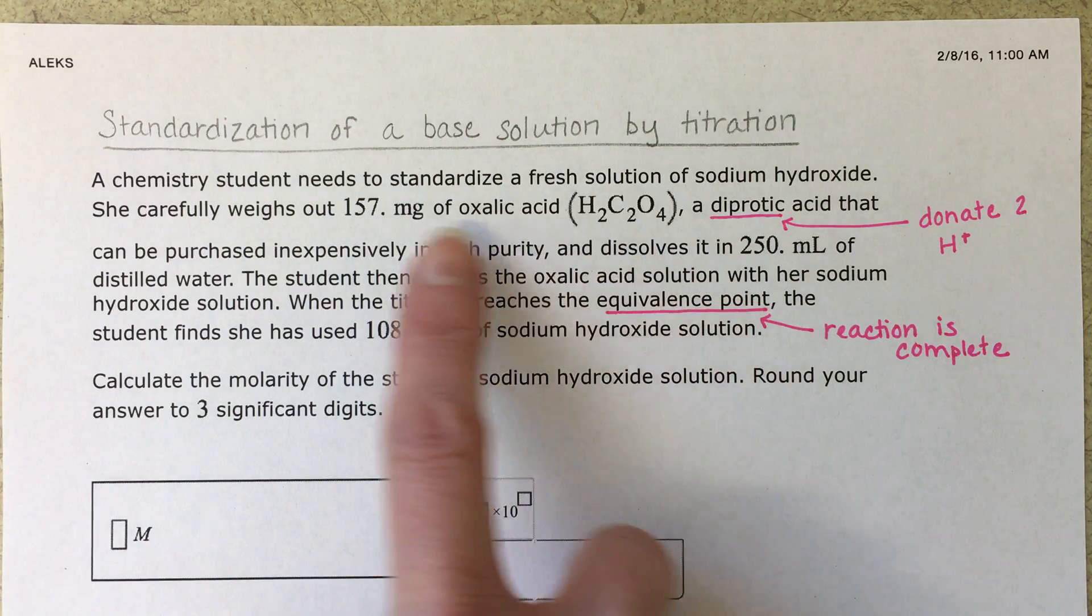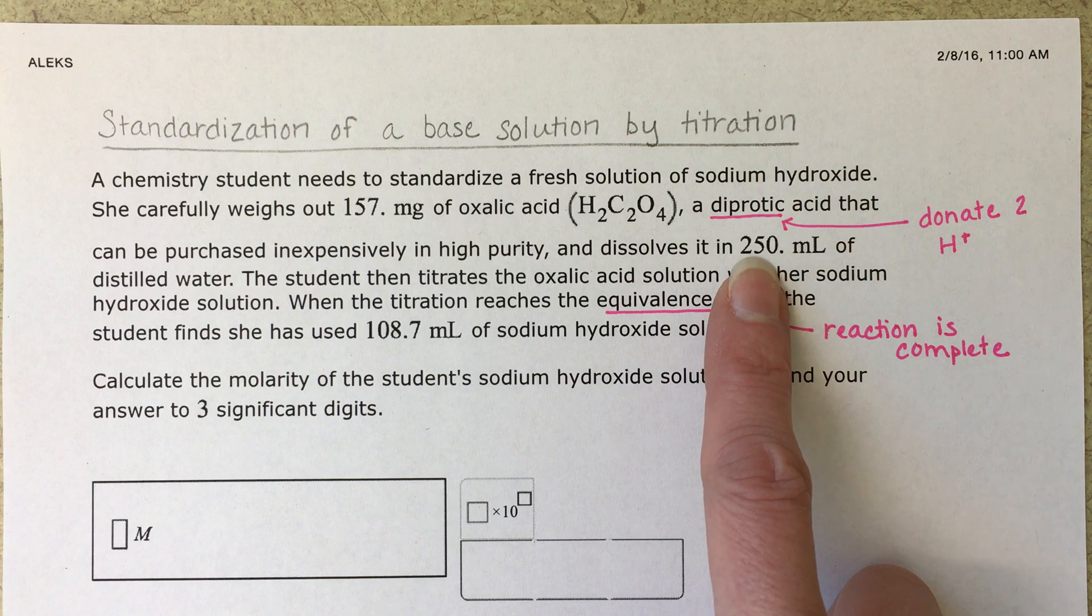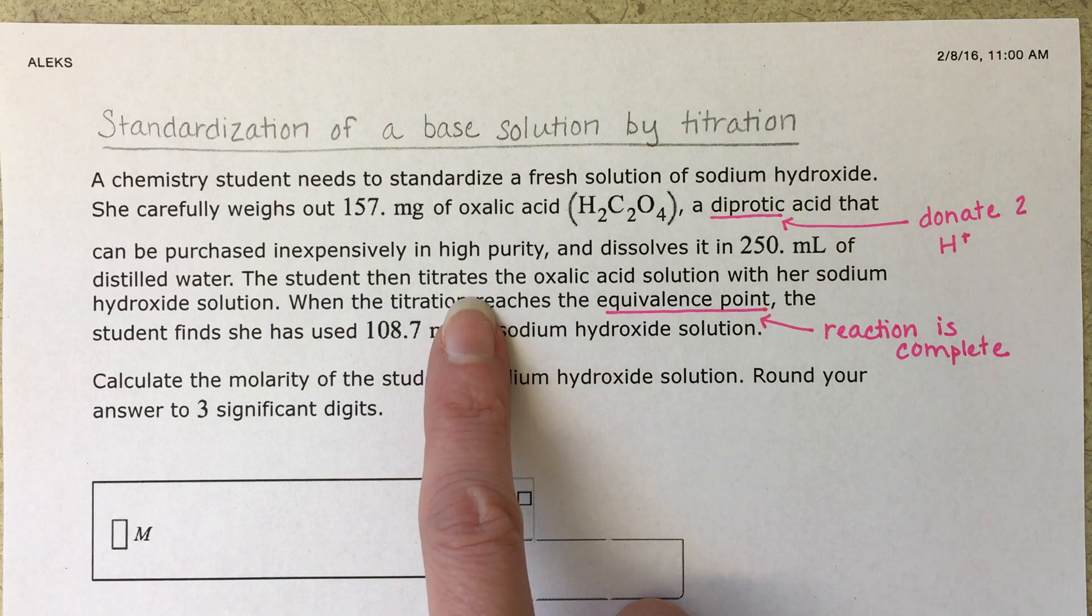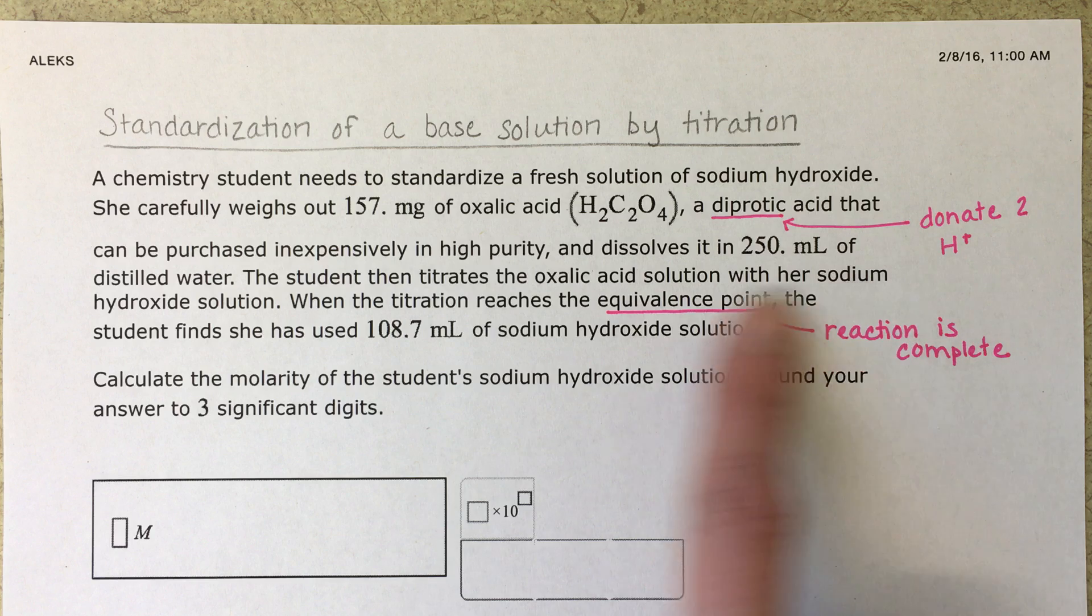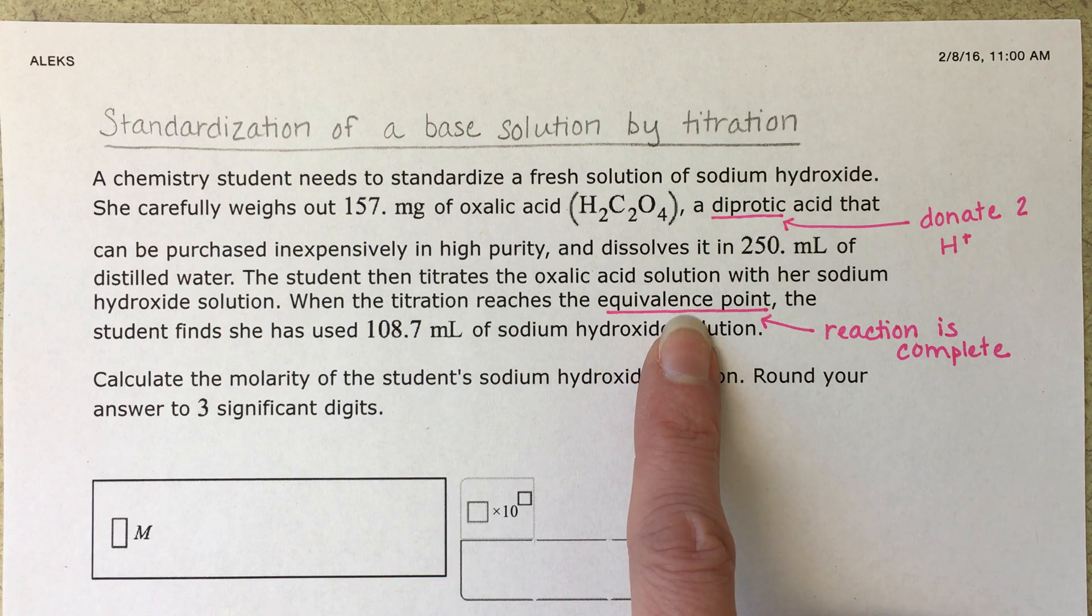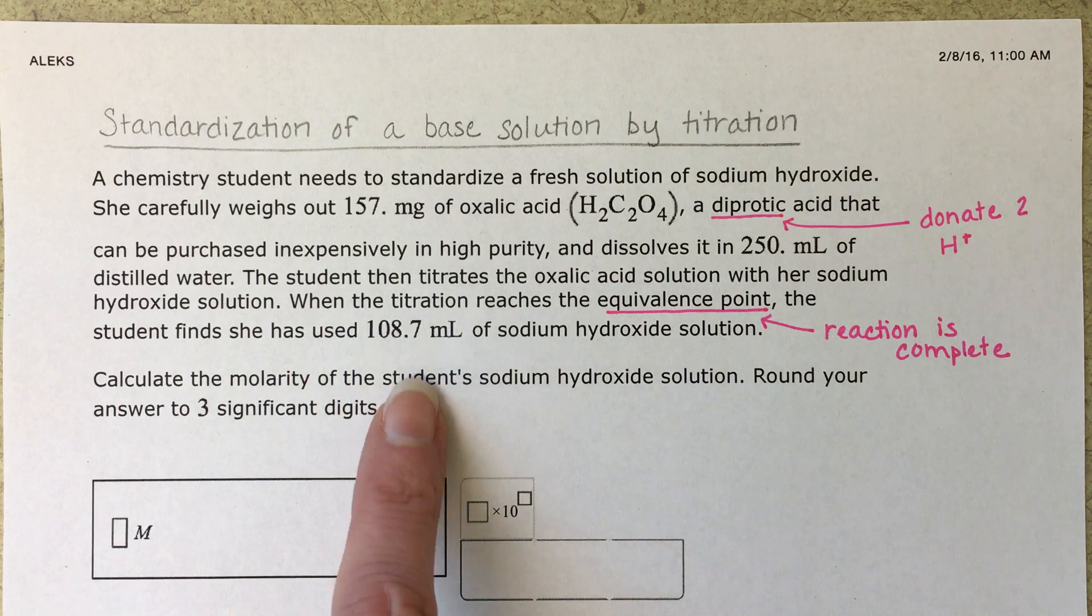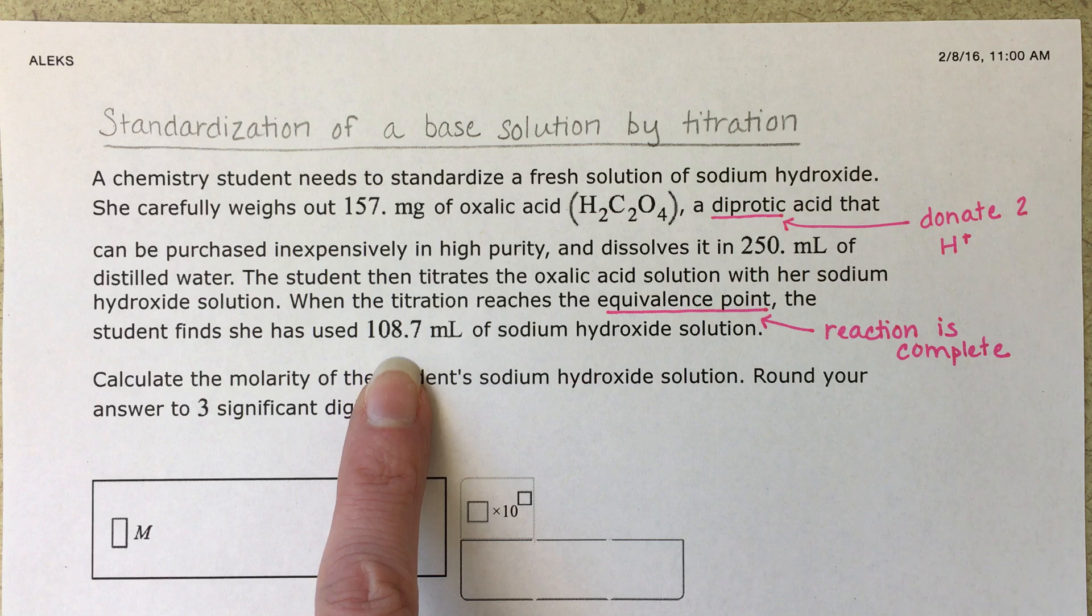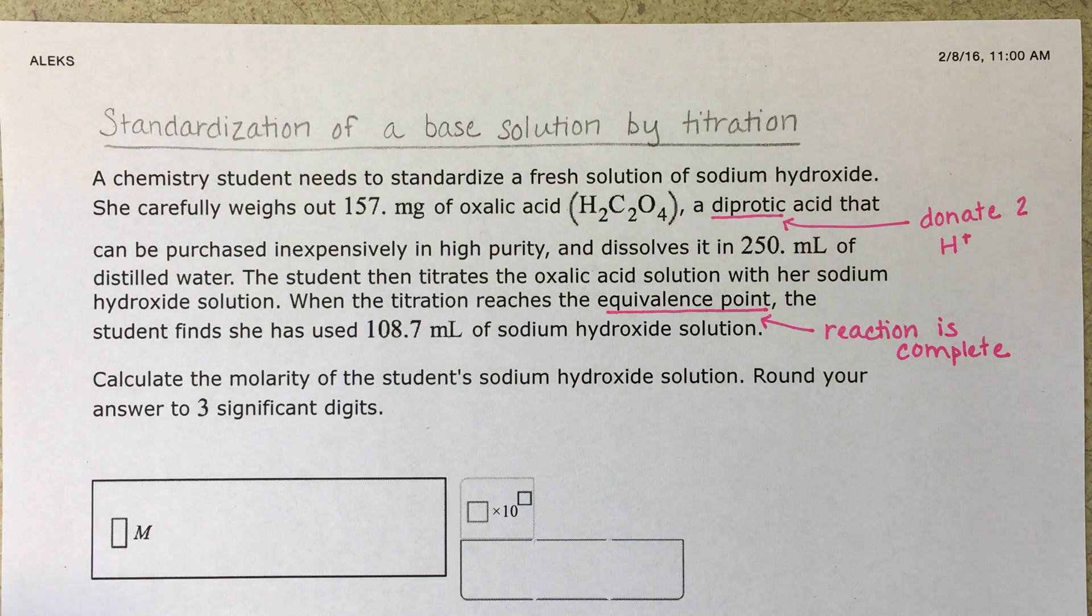So the 0.157 milligrams of oxalic acid is dissolved in 250 milliliters of water and then it is titrated, which is just a type of reaction, a lab technique. It's titrated with sodium hydroxide solution. When the titration reaches the equivalence point, meaning that the reaction is over, the student finds that she used 108.7 milliliters of sodium hydroxide. What's the molarity of the sodium hydroxide solution?